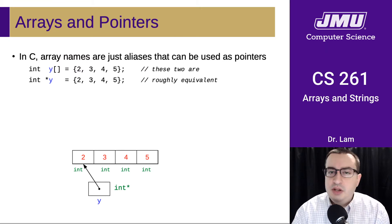In C, array names are really just essentially aliases that are used as pointers. These two lines are roughly equivalent. They both create an array of four integers and initialize those integers to 2, 3, 4, and 5.